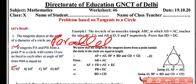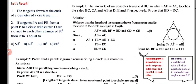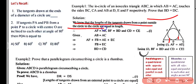Now example number one: the incircle of an isosceles triangle ABC, in which AB equals AC, touches the sides BC, CA, and AB at points D, E, and F respectively. We have to prove that BD equals DC. We know that the length of tangents drawn from an external point to the circle are equal in length. So here: AF equals AE, BF equals BD, and CD equals CE.